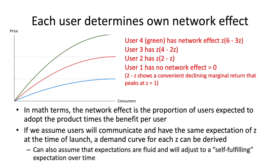Each user determines their own network effect. I've graphed four users here. The high-sloping graph person has a network effect that starts at zero — so if no one's using the product, this consumer gets no benefit. For the top user, there's a nice high graph going up, it reaches a peak, and then starts to slope off. This represents the idea of diminishing marginal returns. At some point it starts to not benefit you that much — over 50%, over 70%, over 80%.